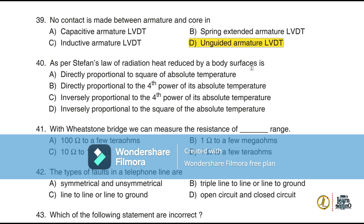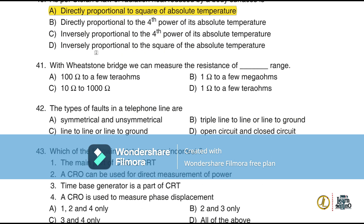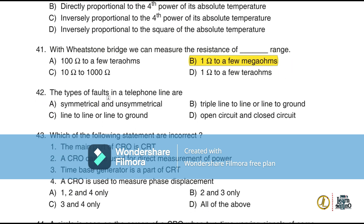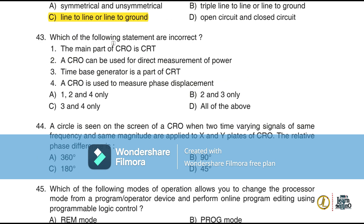Question 40: As per Stefan's law of radiation, heat radiated by a body surface is directly proportional to the square of absolute temperature. Question 41: With a Wheatstone bridge we can measure resistance from one ohm to a few megaohms (option B). Question 42: The types of faults in telephone lines are line-to-line or line-to-ground. Question 43: Regarding CRO statements — a CRO cannot be used for direct measurement of power, and the time-base generator is not a part of the CRT; these are the incorrect statements.